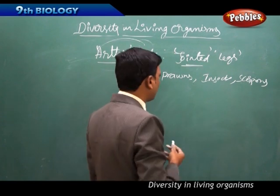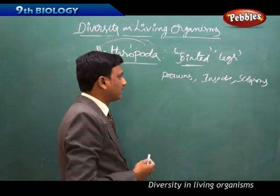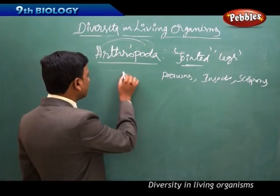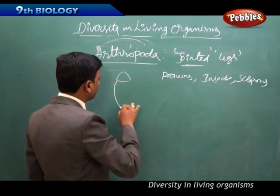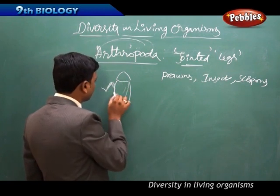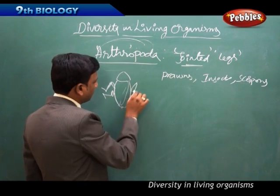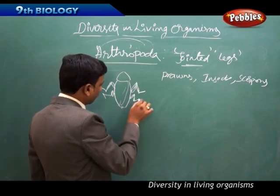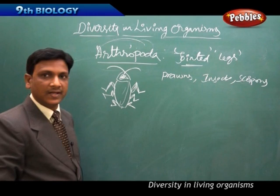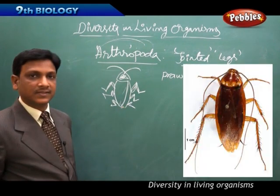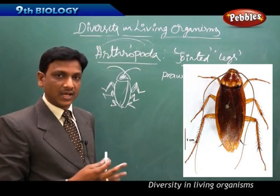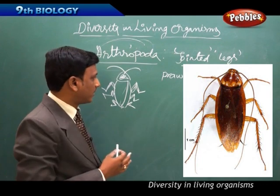Cockroaches, houseflies, and butterflies also belong to Arthropoda. These animals have jointed legs and bilateral symmetry. If you observe a cockroach or scorpion, you can see the body is segmented and has jointed legs.